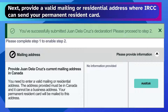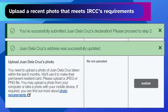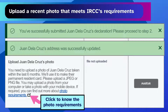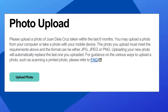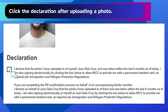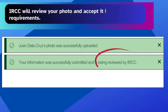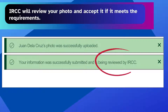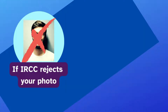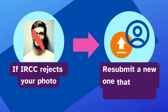Next, provide a valid mailing or residential address where IRCC can send your permanent resident card. After that, you need to upload a recent photo that meets IRCC's requirements. Click the declaration after uploading a photo and then submit your documents for review. IRCC will review your photo and accept it if it meets the requirements. This process may take some time, so be patient and check the Portal regularly for updates. If your photo is rejected, you should resubmit a new one that follows the guidelines.